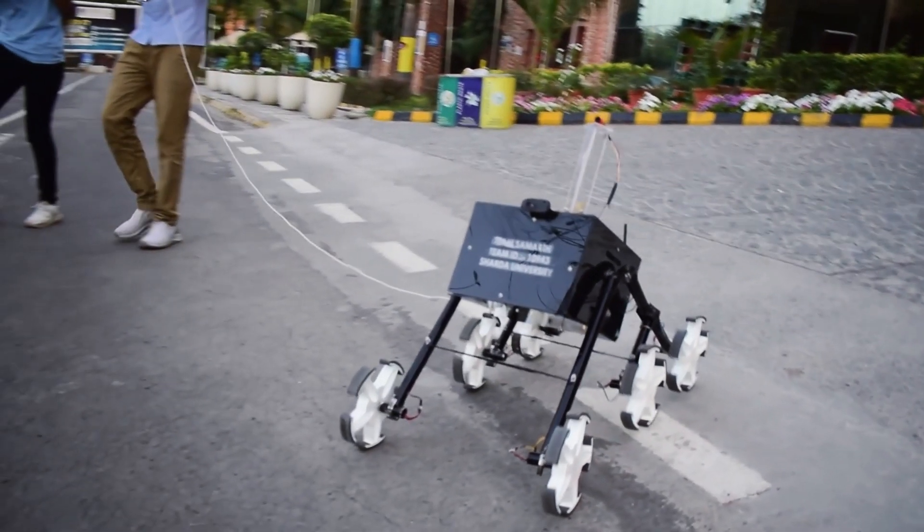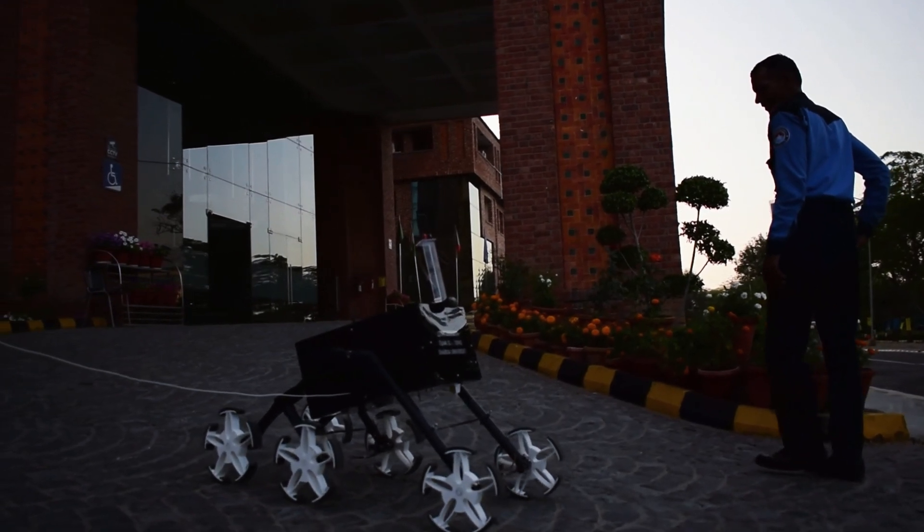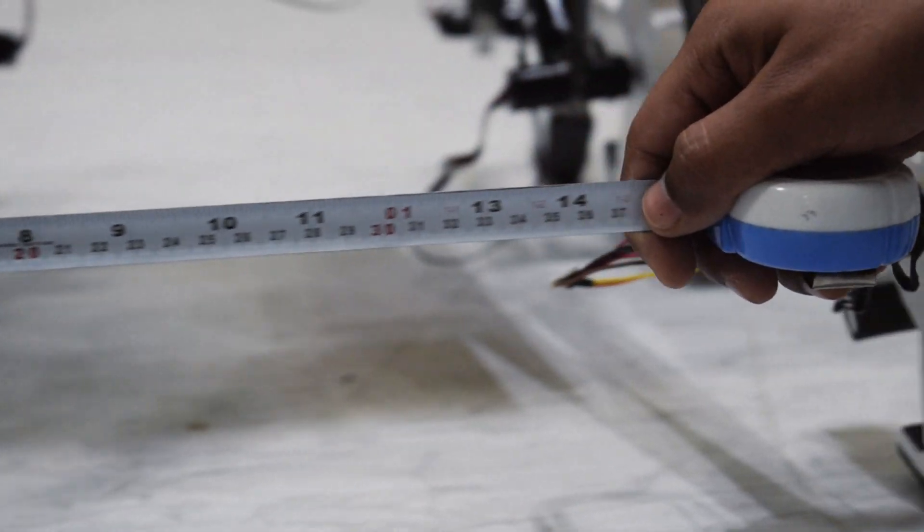Today we are here to show you the hardware demonstration video of our rover. First and foremost, let's discuss the readiness of our rover. The dimensions are 97 cm length, 70 cm height, and 54 cm breadth.